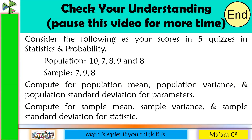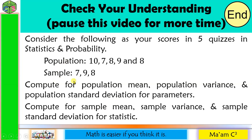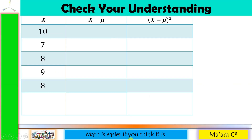Let us answer: consider the following as your scores in 5 quizzes in statistics and probability. Your scores are 10, 7, 8, 9, and 8. Afterwards, you will get a random sample of 3. Let's say those are 7, 9, and 8. We are going to compute the mean, variance, and standard deviation of both the population and the sample. Let's start.